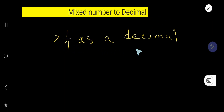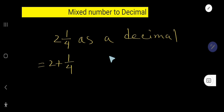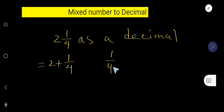Two and one fourth as a decimal. This is a mixed number and I would like to convert it to decimal. We can convert this mixed number to decimal in two ways. Let me show you the first way. We can rewrite this problem as two plus one fourth — we can rewrite the fractional part and convert it to decimal.